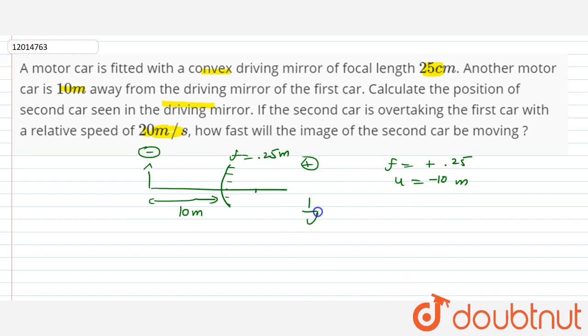So this is the mirror formula: 1 by f equals 1 by u plus 1 by v. So this is 1 by 0.25, it will be equal to minus 1 by 10 plus 1 by v. So 1 by v is equal to 1 by 4 minus 1 by 10, so the image distance v will be equal to 0.244 meters.